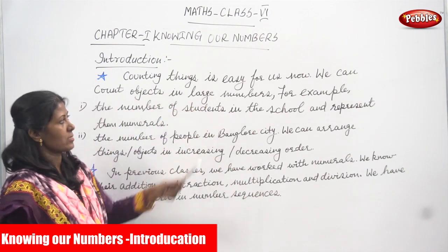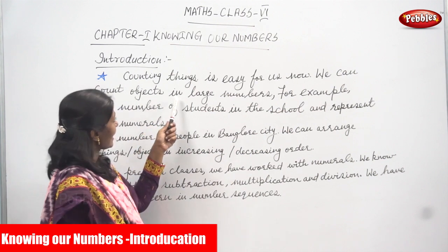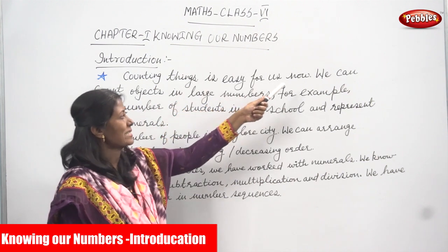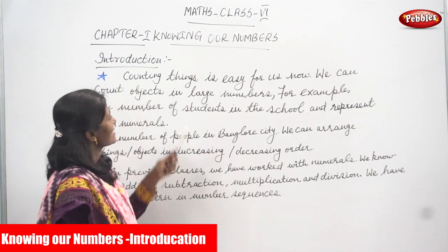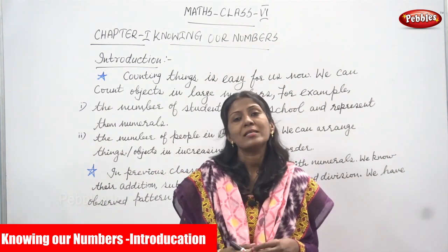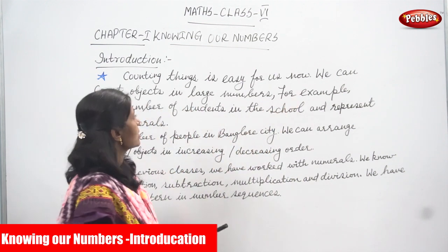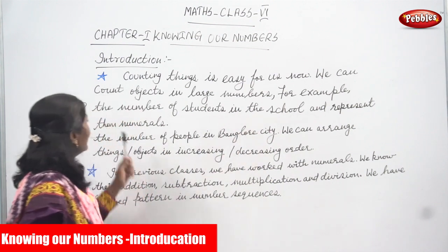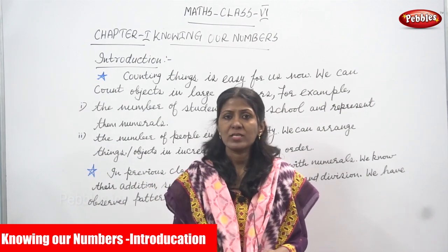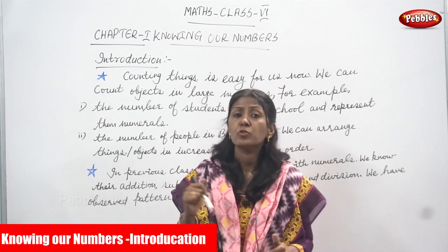Counting things is easy for us now. We can count objects in large numbers. For example, the number of students in the school — we represent them in numerals. We can also say the number of people in Bangalore city or the number of people in Chennai city — we represent those also in numerals.